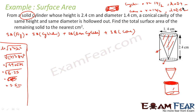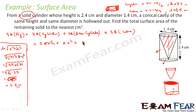Now we know all the values. Let us put them in. Surface area of the cylinder curved surface is 2πrh. Base area of the cylinder is πr². Surface area of the cone is πrL. Let us put the values.